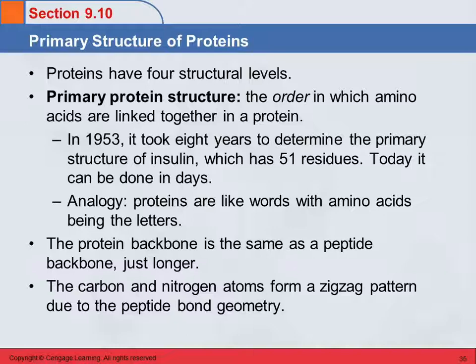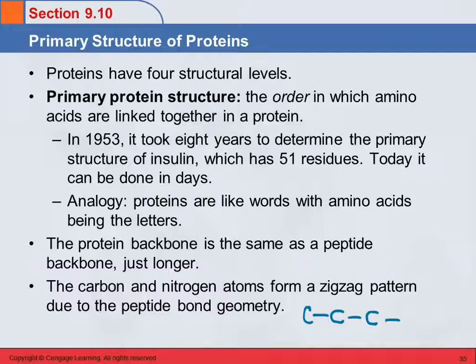The protein backbone in proteins is just the same as a peptide backbone — the only difference is it's longer. Now we're going to look at exactly what those carbon and nitrogen atoms are doing. They actually form a zigzag pattern because of the peptide bond geometry. Remember when we talked about hydrocarbons — even though we frequently draw them in a line, really it's more like a zigzag because there's a tetrahedral structure at each carbon. So the carbon and nitrogen atoms also form their own pattern.